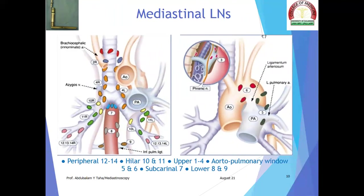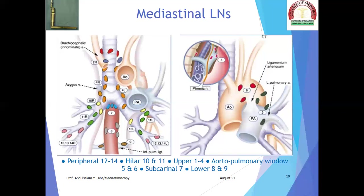One of the important contents of the mediastinum is the mediastinal lymph nodes. These lymph nodes are divided into 14 stations: number 1, the highest mediastinal; number 2, the upper paratracheal right and left; number 3, the prevascular and retrotracheal; number 4, the lower paratracheal; number 5, the subaortic; number 6, the paraaortic; number 7, the subcarinal; number 8, the paraesophageal; number 9, the inferior pulmonary ligament; numbers 10 and 11 are the hilar lymph nodes; and numbers 12 to 14 are the peripheral lymph nodes in the lung.